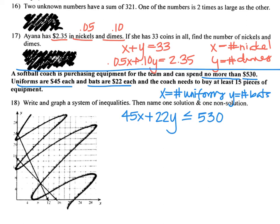Remember, two variables means two equations or two inequalities. So the last one says I need to buy at least 15 pieces of equipment. So that's the number of uniforms plus the number of bats needs to be at least, that's greater than or equal to, 15 pieces of equipment. And that's the inequality for that problem.